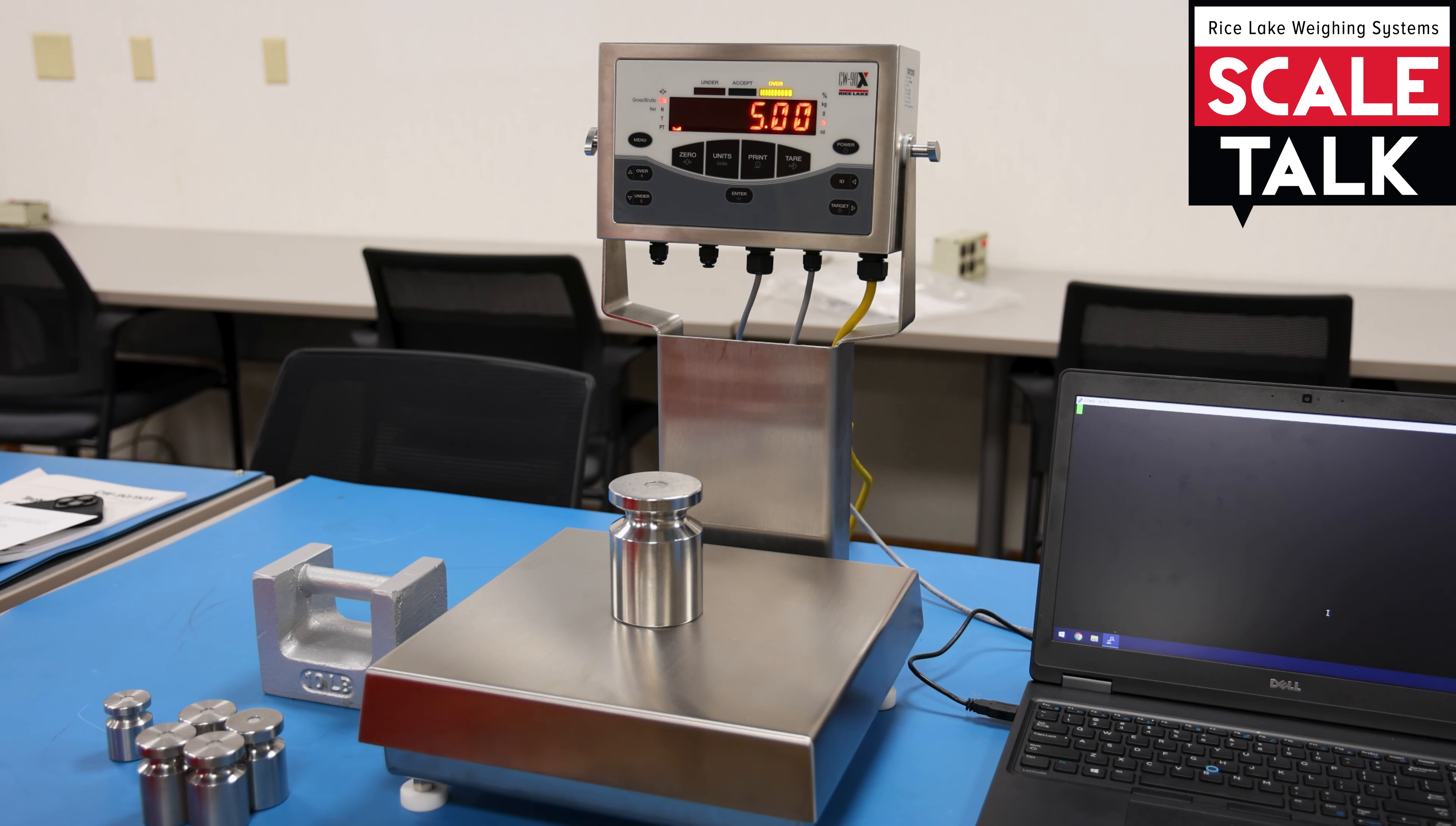If I want to make sure that five pounds is included in my range, I want to bump my value one division higher. So that five, exactly five, falls within the accepted range.